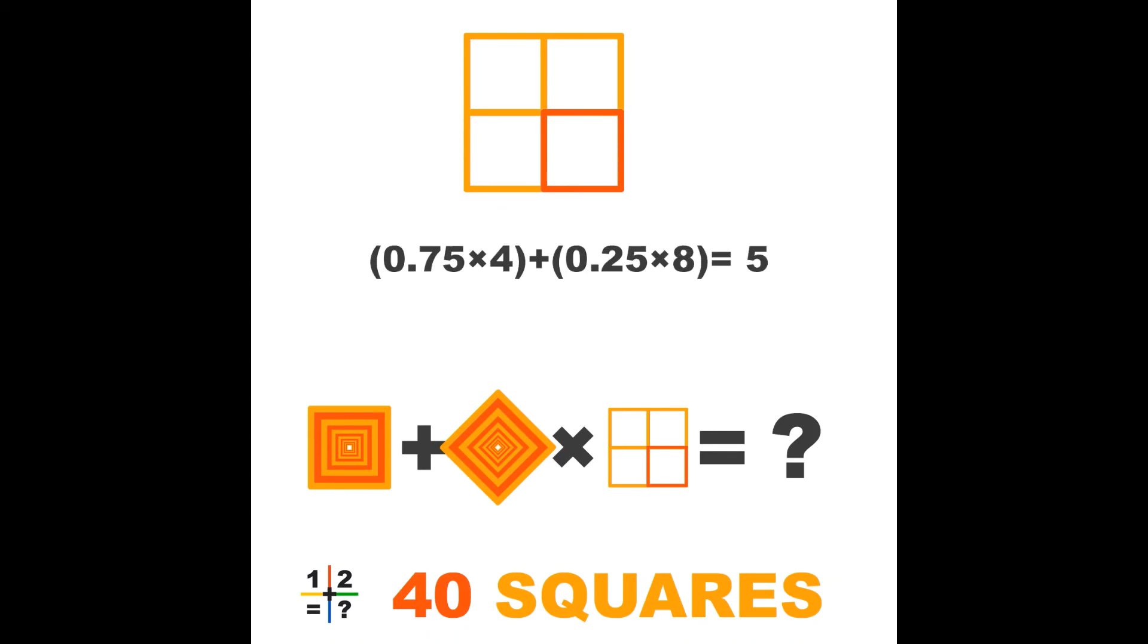So what is the value of those squares? 0.75 times 4 plus 0.25 times 8 equals 3 plus 2 equals 5. So the three composed squares have a value of 5. Now we can calculate the value of the last object, and that is 4 plus 8 plus 5 plus 5 plus 5 equals 27.